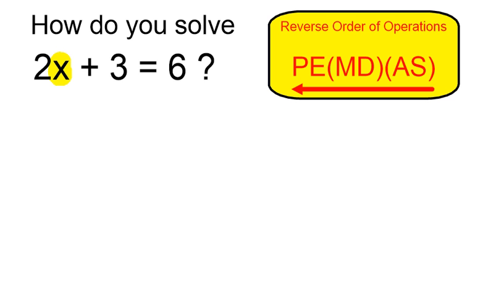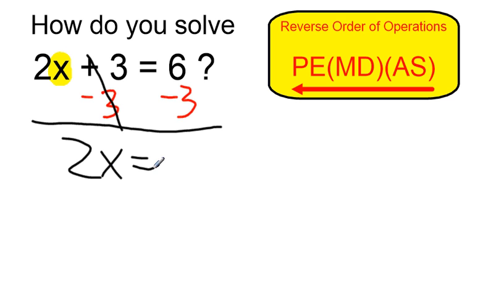I'm going to start by getting rid of the plus 3 by subtracting 3. If I do that on the left side, I also want to do that on the right side. The plus 3 and minus 3 cancel, leaving me with 2x equals 6 minus 3, which is just 3.